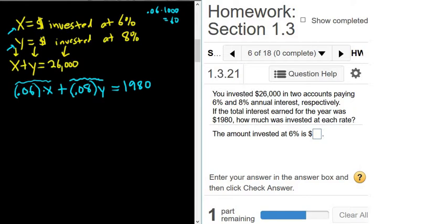And so now what you can do is you can take this equation here and solve for y. So simply subtract x. And so we end up with y equals 26,000 minus x. And then we take this and we plug it back into this equation here. Let me switch colors here. So we have .06x plus .08 and then replacing y with 26,000 minus x. And then here we have 1,980.